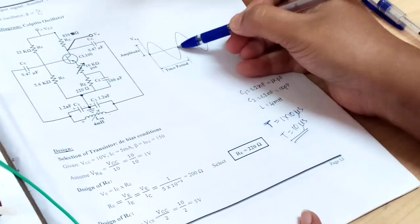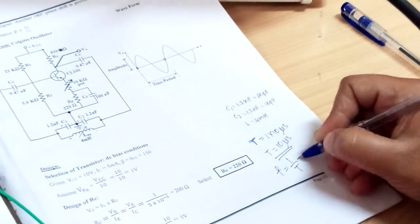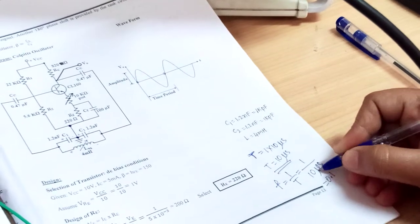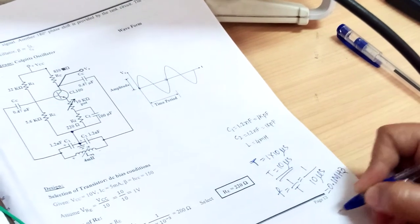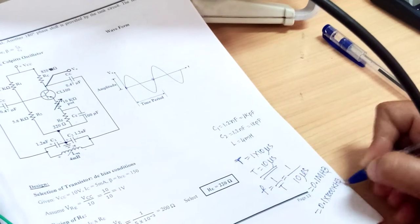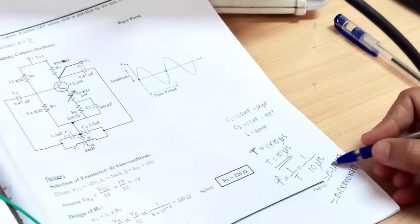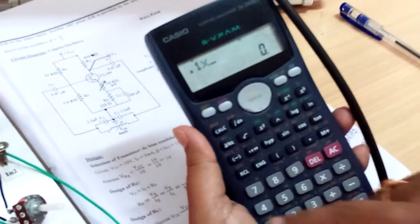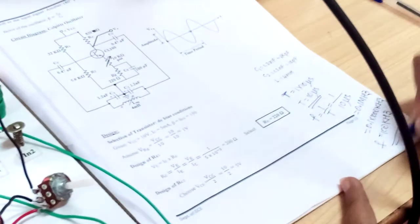So one cycle equals 10 microseconds. Frequency F = 1/T = 1 over 10 microseconds = 0.1. Since micro goes to the numerator it becomes megahertz, so multiplying 0.1 by 1000 gives 100 kilohertz. So the frequency is 100 kilohertz, and in the design we also took 100 kilohertz — so we are getting exactly the designed frequency.